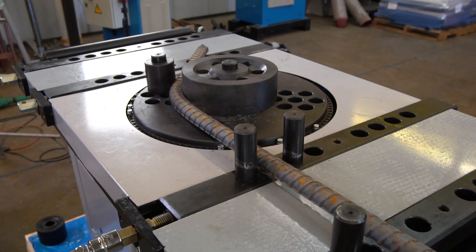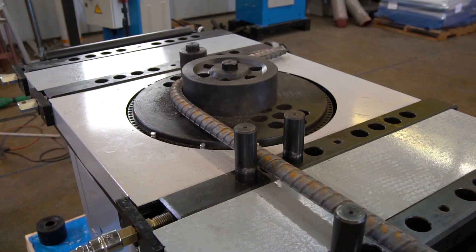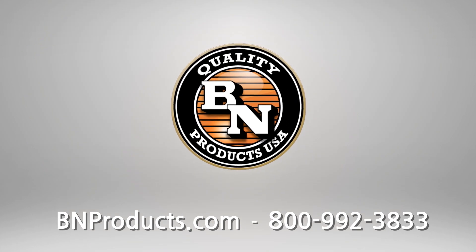Well, that's a look at how to operate the DBM 40P production rebar bending machine. If you have any questions, please visit us online or call 800-992-3833.